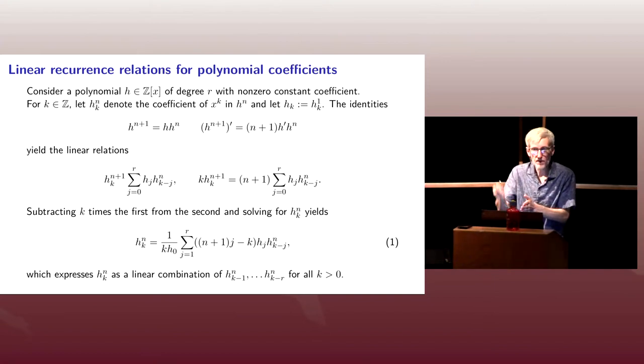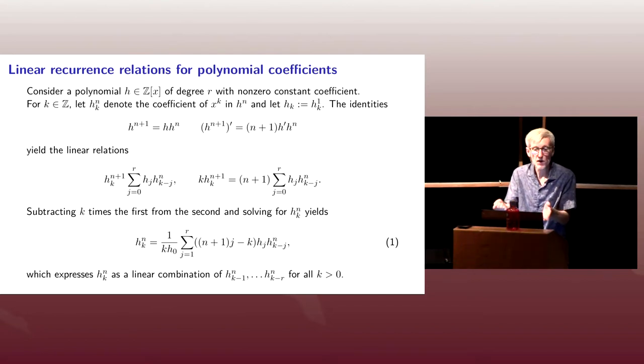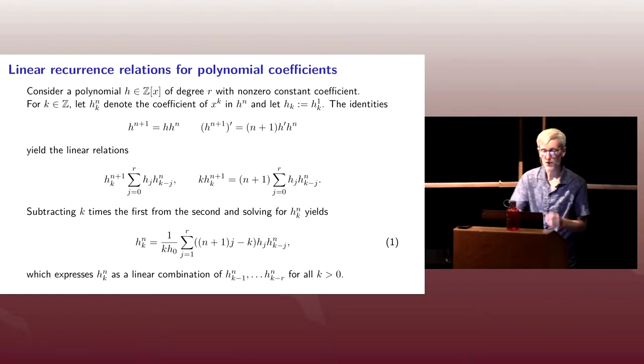And we can compute the very first, the one non-zero coefficient we want is h_0^n. And we can compute that very quickly, using binary exponentiation, especially if we're working in a finite field.